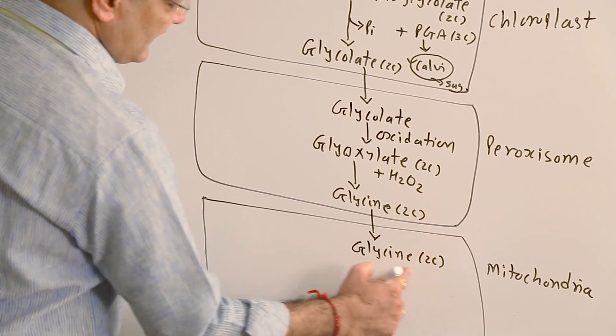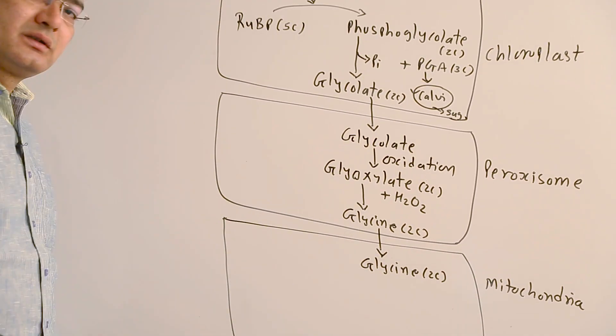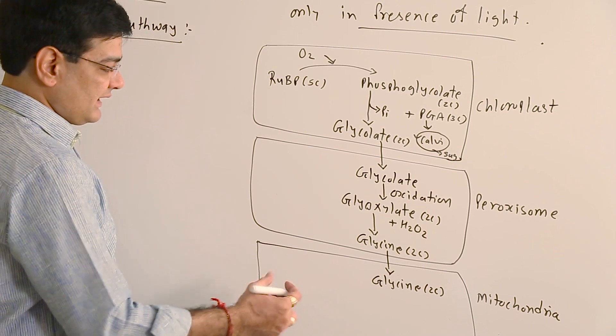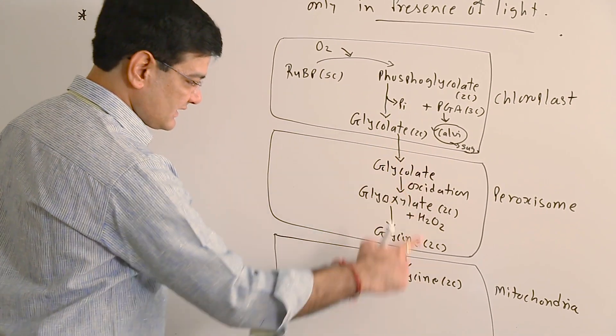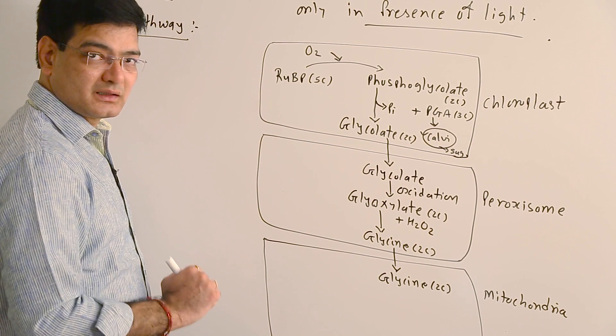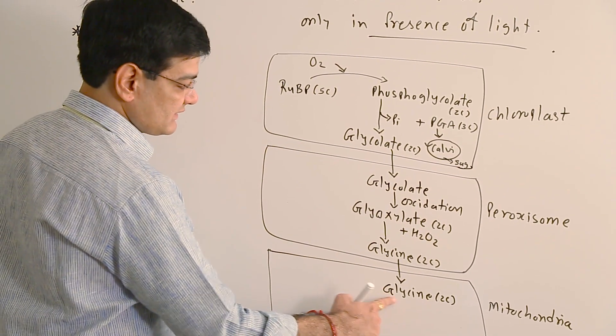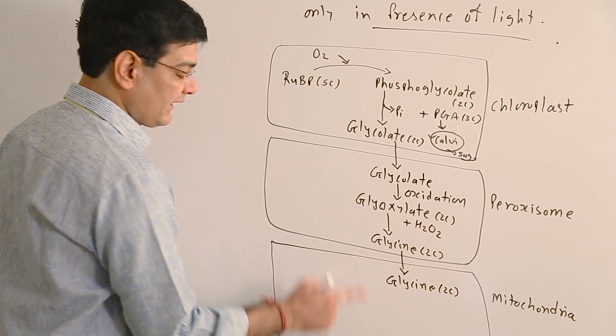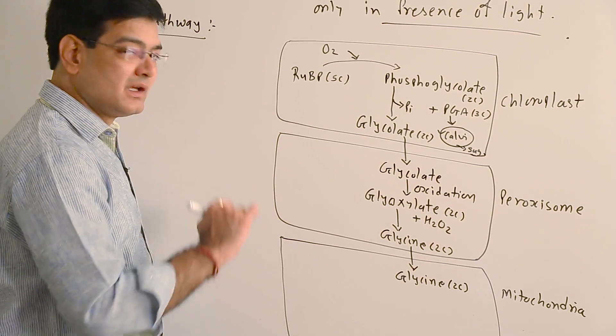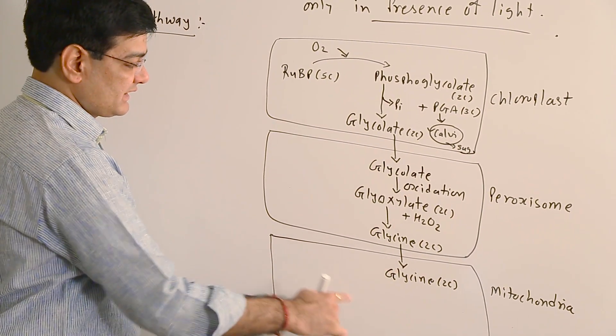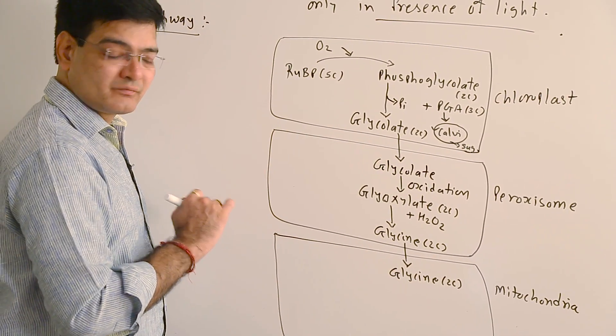This glycine has two carbons, as I told, but remember that with the help of two glycine, the process cannot be continued further in the mitochondria. To continue the process, at least four carbons are required in the mitochondria to complete the photorespiration cyclic process.